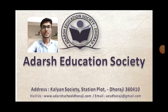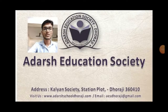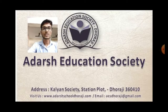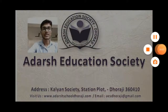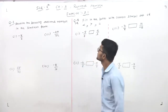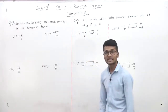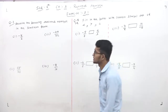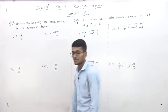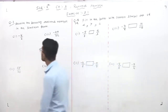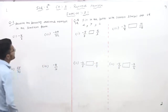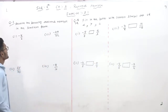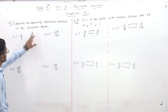Namaskar. Welcome to Adarsh Education Society. This is our continuing chapter — Chapter 9, Exercise 9.1, Question number 7. In question number 7, rewrite the following rational numbers in the simplest form.